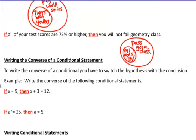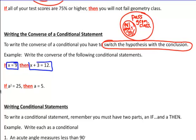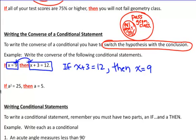Let's talk about writing a converse. The key to writing a converse is you have to switch the hypothesis with the conclusion. The 'if' and the 'then' do not switch. So if I'm writing the converse, I write 'if,' now I write 'x plus 3 equals 12,' then I write my original hypothesis: 'x equals 9.' True or false? Well, if x + 3 = 12 and I solve it, does x equal 9? Yes, it does. This is a true statement, so the truth value is true — I don't have to do anything else with it.